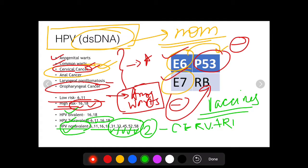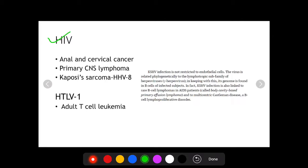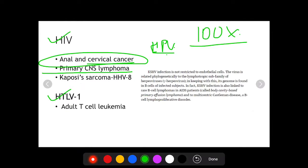Having discussed EBV and HPV, now let's move to other oncogenic viruses, the HIV and HTLV-1. HIV has been implicated in the pathogenesis of anal and cervical cancer like HPV. It's also implicated in primary CNS lymphoma. In fact, primary CNS lymphoma occurs 100 times more in HIV positive patients as compared to the general population.